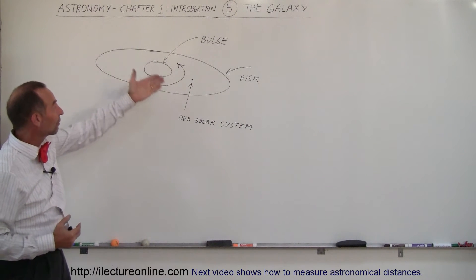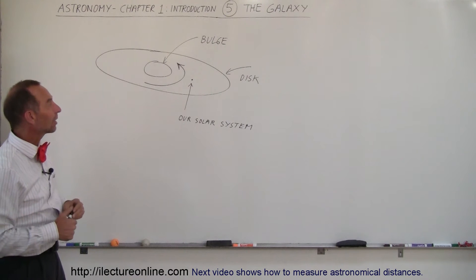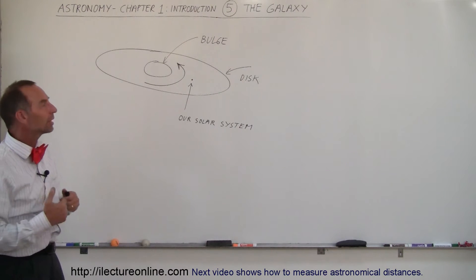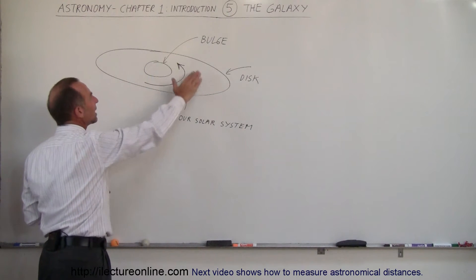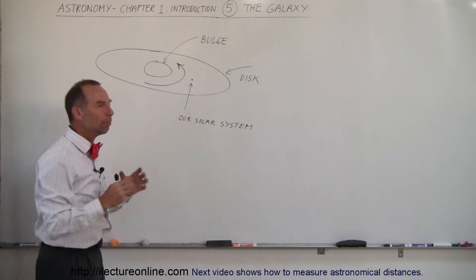So what I've done here is I've drawn a primitive look of a galaxy. The galaxy that we live in, the Milky Way galaxy, has what we call a bulge and has spiral arms that create the disk around the bulge.